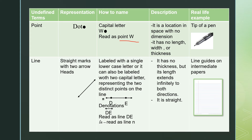This is read as point W. For its description, a point is a location in space with no dimensions. Take note of the word 'no dimensions.' It has no length, no width, or no thickness. For a real-life example of a point, we have the tip of the pen.